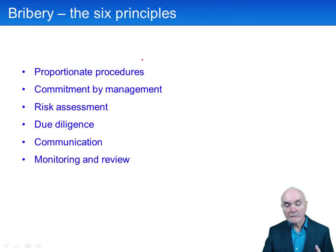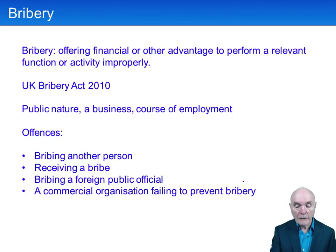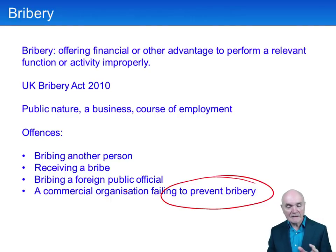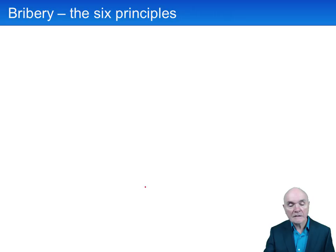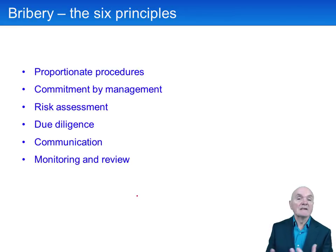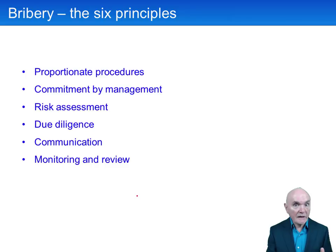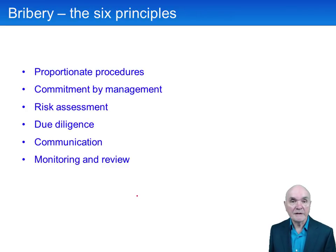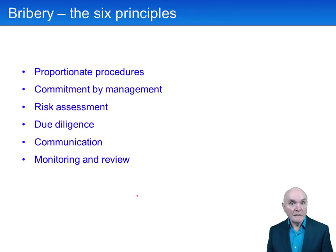The six principles that organisations should have in force to prevent bribery are as follows. First, there have to be proportionate procedures — you look at the chance of bribery occurring, and if it's high, then you need good procedures, checks, balances, reports, and supervision to stop it. But if the chance of perpetrating a bribe are very small because of the nature of your business, then you don't need the same degree of diligence. It needs a commitment by management — management must set out its stall and say we are against bribery, even though it may allow the company to win lucrative contracts.